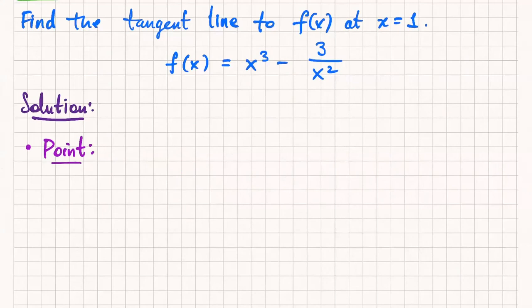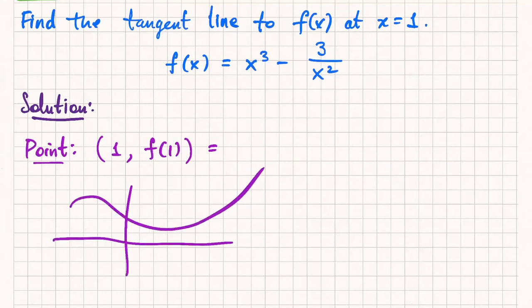So first, we need the point, right? We just get that from the original function. So (1, f(1)) is the point that the tangent line has to pass through. Just to remind you graphically what's happening, here's some function and here's our tangent line. I want that tangent line to kind of hug that function at that point. They have to coincide at that point. That's why we use the original function.